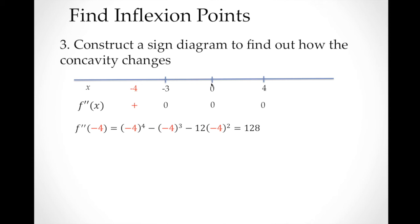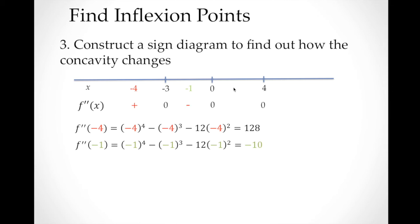For the interval from −3 to 0, we use the test value x = −1: f''(−1) = −10, so the sign is negative. For the interval from 0 to 4, we use the test value x = 1: f''(1) = −12, so the sign is also negative. You can verify with x = 2 or x = 3 and will also get a negative sign.